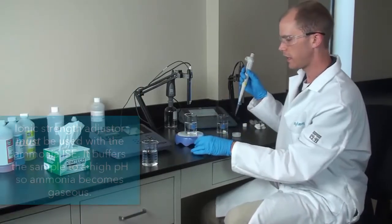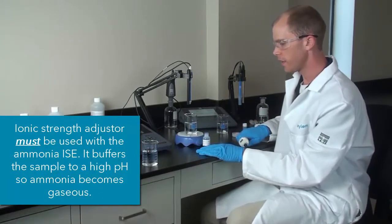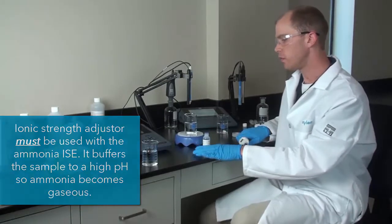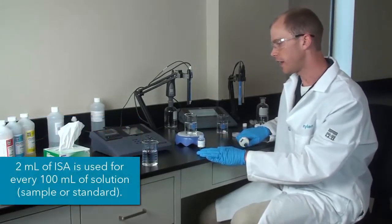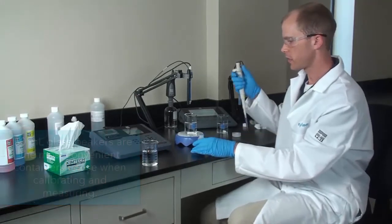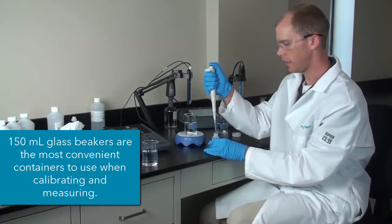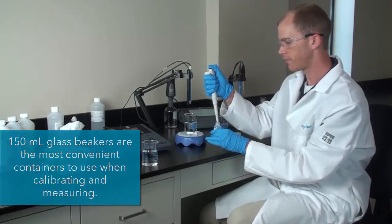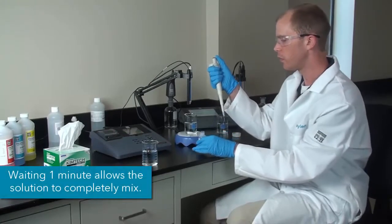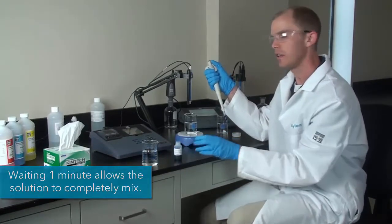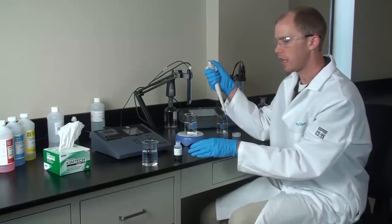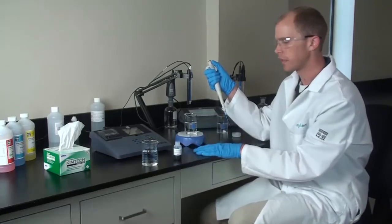So then what we will do is add our ISA. So whether you are calibrating using your standards or you are measuring a sample, you want to add 2 ml of this blue ISA for every 100 ml of solution. So you really need to make sure that your standards and samples are prepared the same way. So what I will do with this is add 2 ml and then I will wait 1 minute after adding it to start my calibration. And that will just ensure that the sample and the blue ISA have mixed well together.